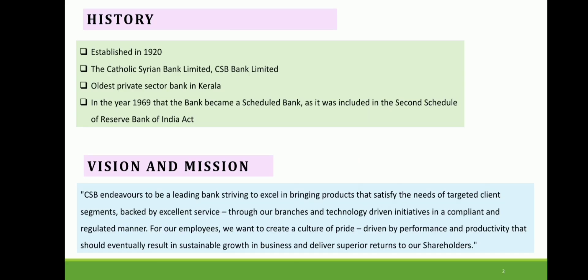CSB Bank Ltd., or Cathaline Syrian Bank Ltd., is an Indian private sector bank with its headquarter at Thrissur, Kerala, India. The bank has a network of over 450 branches and more than 319 ATMs across India. It was founded on 26 November 1920, well before Indian independence, and opened for business on 1 January 1921, with an authorized capital of Rs. 5 lakhs and a paid-up capital of Rs. 45,270.